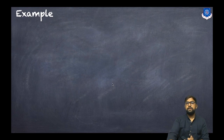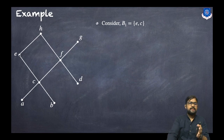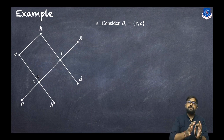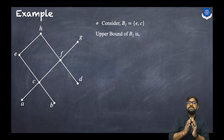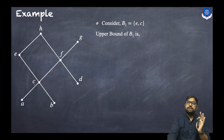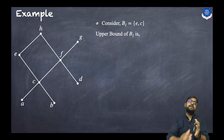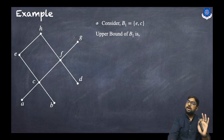Let's take the first example using this Hasse diagram. Consider the set B1 = {E, C}. We want to find the lower bound as well as the upper bound of this set. For upper bounds, remember there has to be a relation from the given set to the upper points. Looking at the diagram, H, F, and G are in upper positions to the given set.